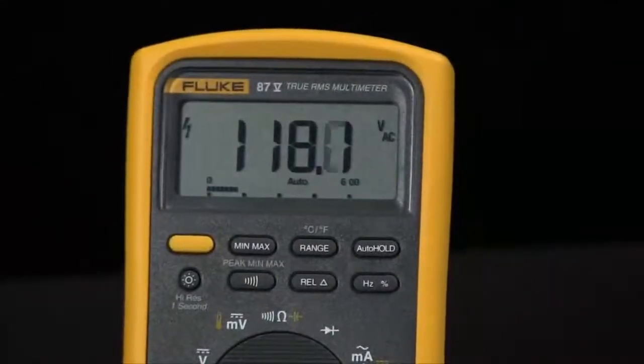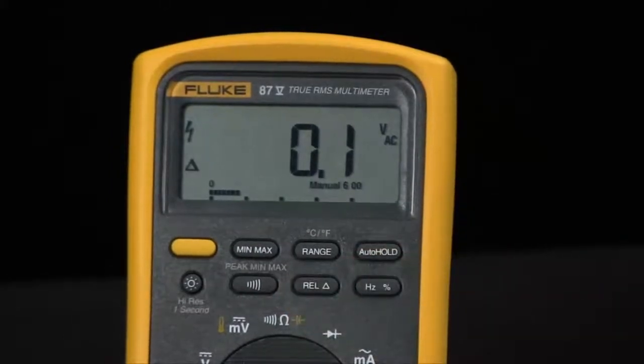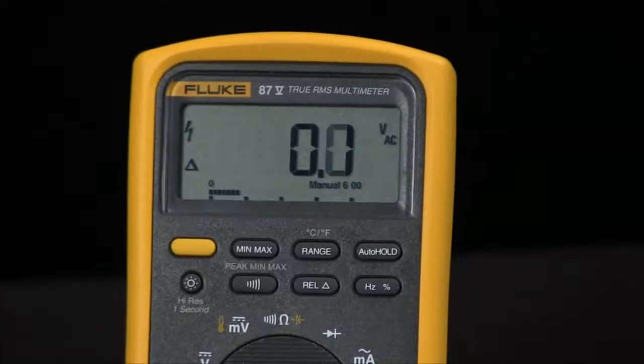So if I was going to go to the source and then hit the relative that goes to zero. If I now went out to the load and saw minus 10 volts I would know I would have a voltage drop.